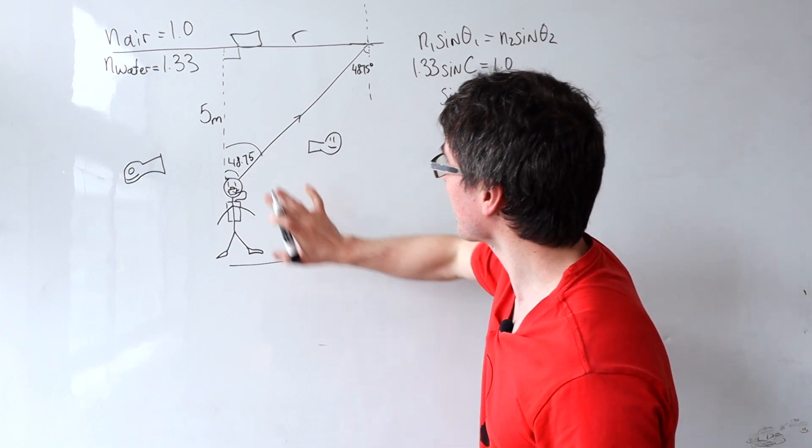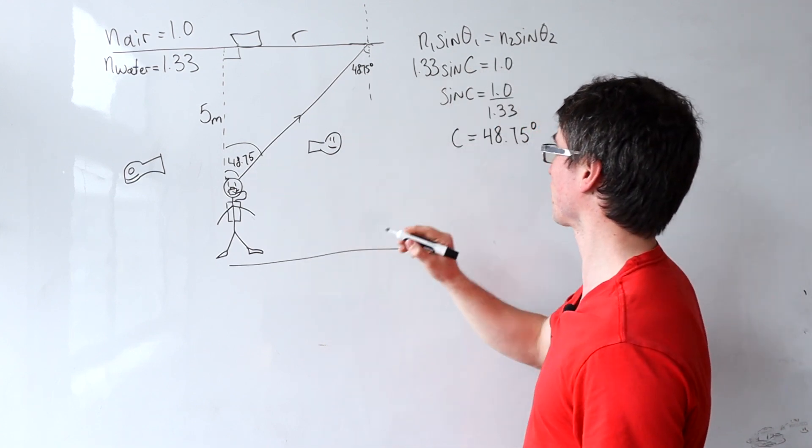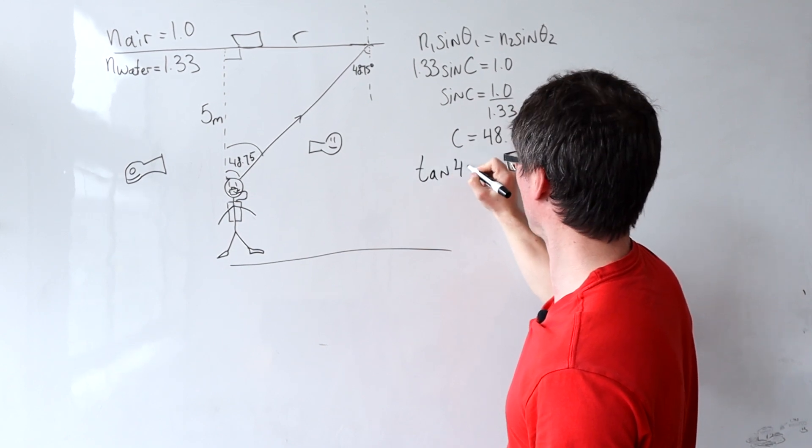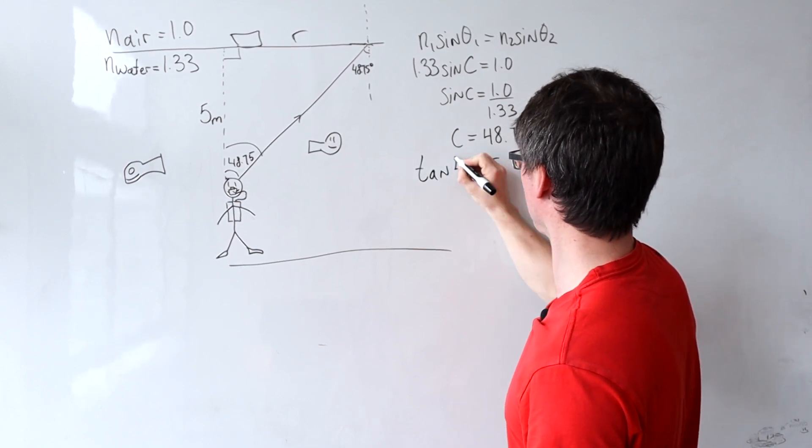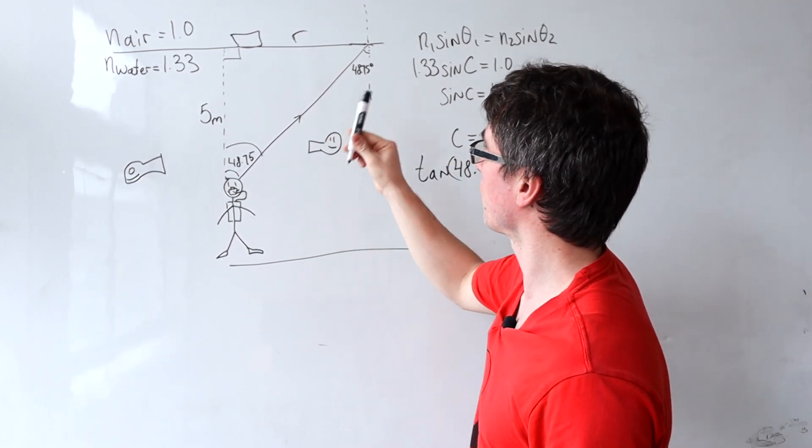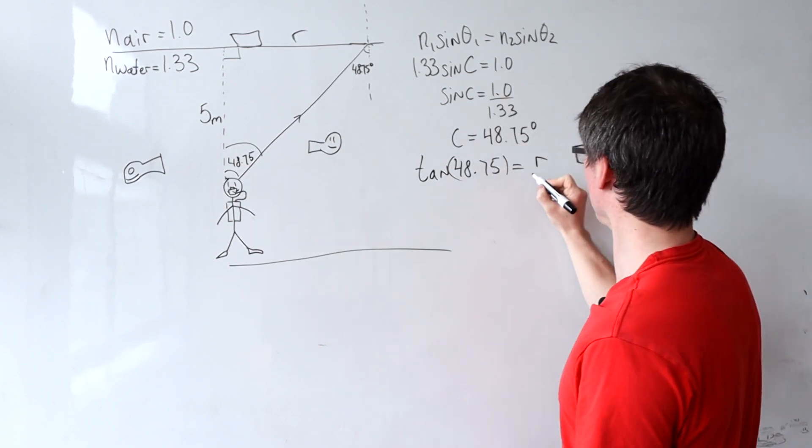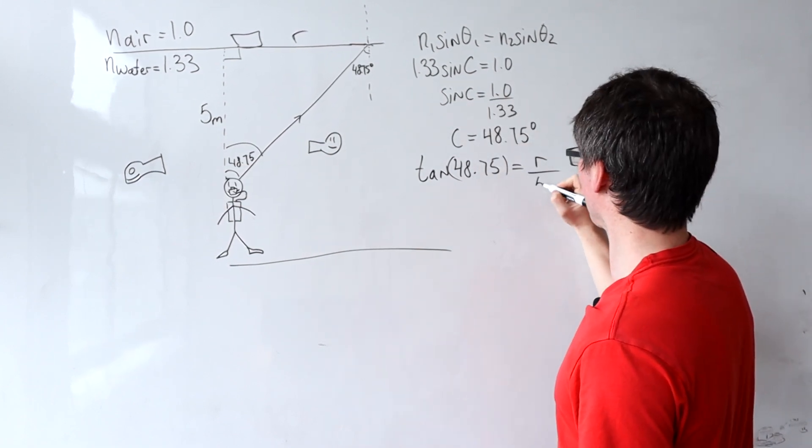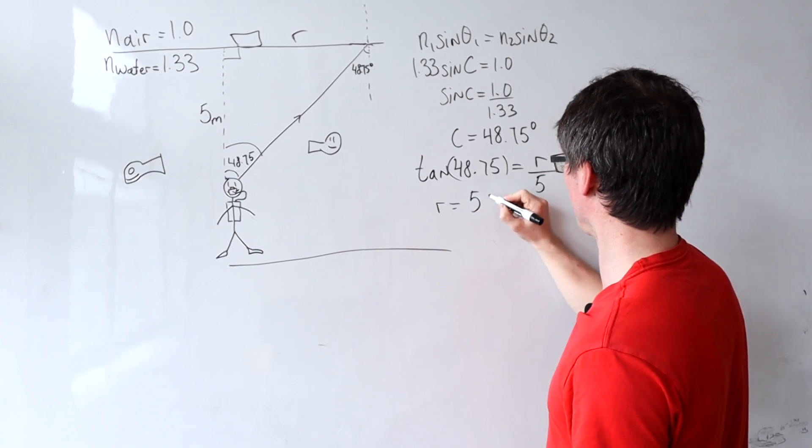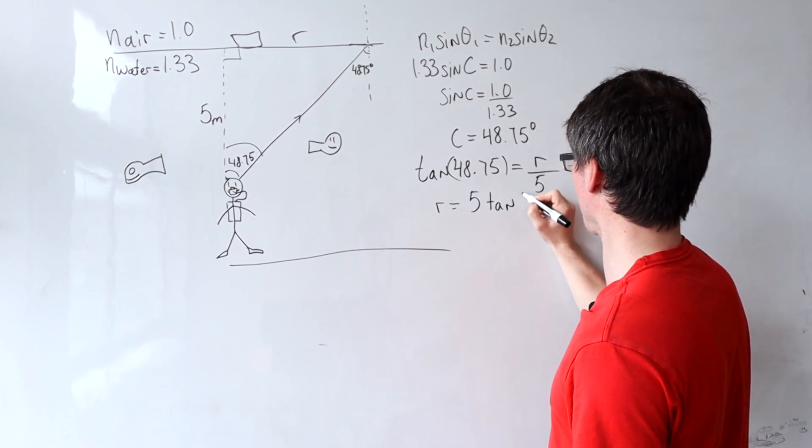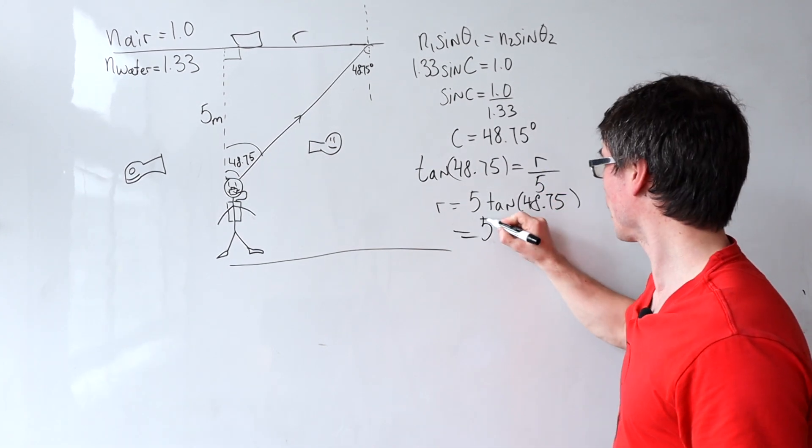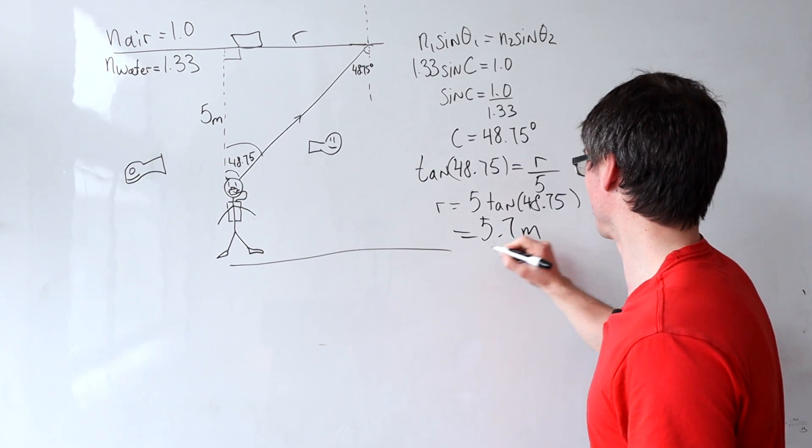I can use the tan function to find the distance because tan of 48.75 equals the opposite R divided by the adjacent which is 5, meaning that R will be 5 multiplied by tan of 48.75, or about 5.7 meters.